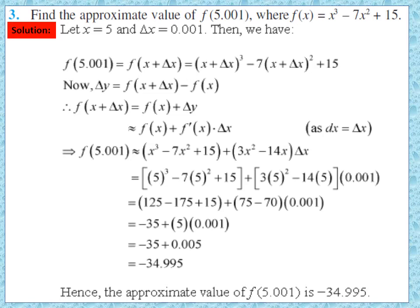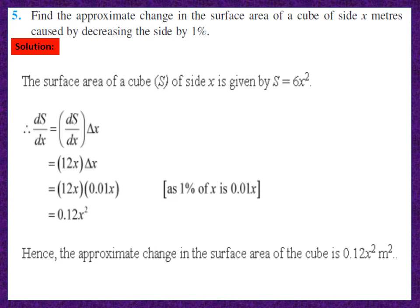So the approximate value of f(5.001) is −34.995. Pause and note down the solution. Moving to question 5: find the approximate change in the surface area of a cube of side x meters caused by decreasing the side by 1%. The surface area of a cube is S = 6x². So dS = (dS/dx) × delta x = 12x × delta x. The change is 1% of x, that is 0.01x. So dS = 12x × 0.01x = 0.12x² m².